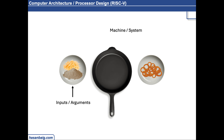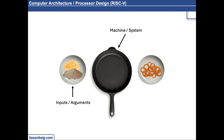So if we want to provide input to this machine, which is a function, we cannot just directly put any input to the function. We have to place it somewhere where the function is supposed to be extracting the input from. This machine knows that it has to read the input from this place. So we will load our input into this place only, into this bowl only. This machine will take the input from this register location and process it however it is required to be processed.